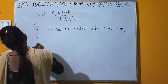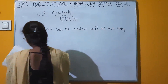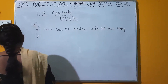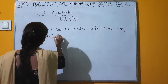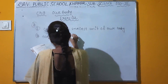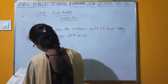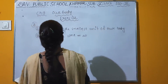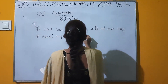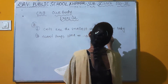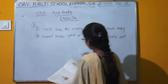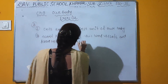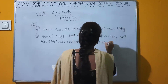Which organ pumps blood to all parts of the body? The heart pumps blood through the two main blood vessels, and blood vessels carry blood to every part of our body.